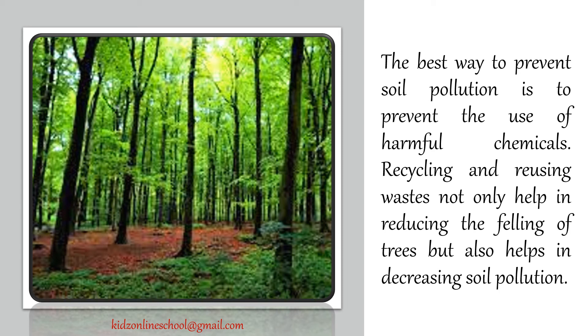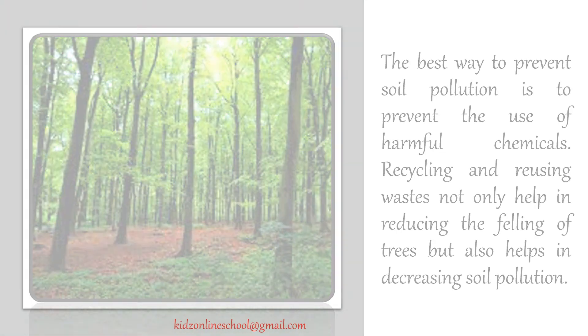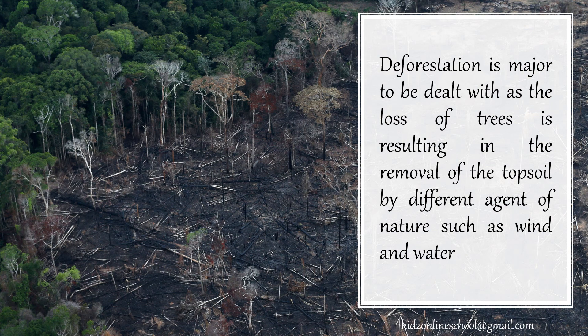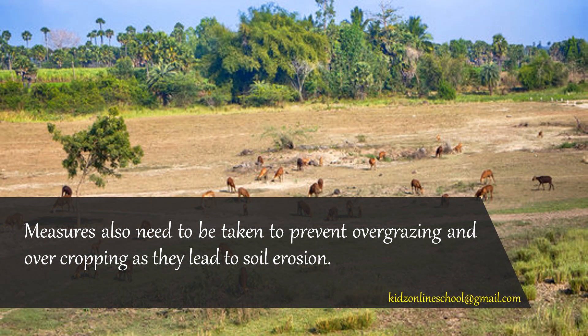The best way to prevent soil pollution is to prevent the use of harmful chemicals. Recycling and reusing waste not only helps in reducing the felling of trees but also helps in decreasing soil pollution. Deforestation is a major concern, as the loss of trees results in the removal of topsoil by different agents of nature such as wind and water. Measures also need to be taken to prevent overgrazing and overcrowding as they lead to soil erosion.